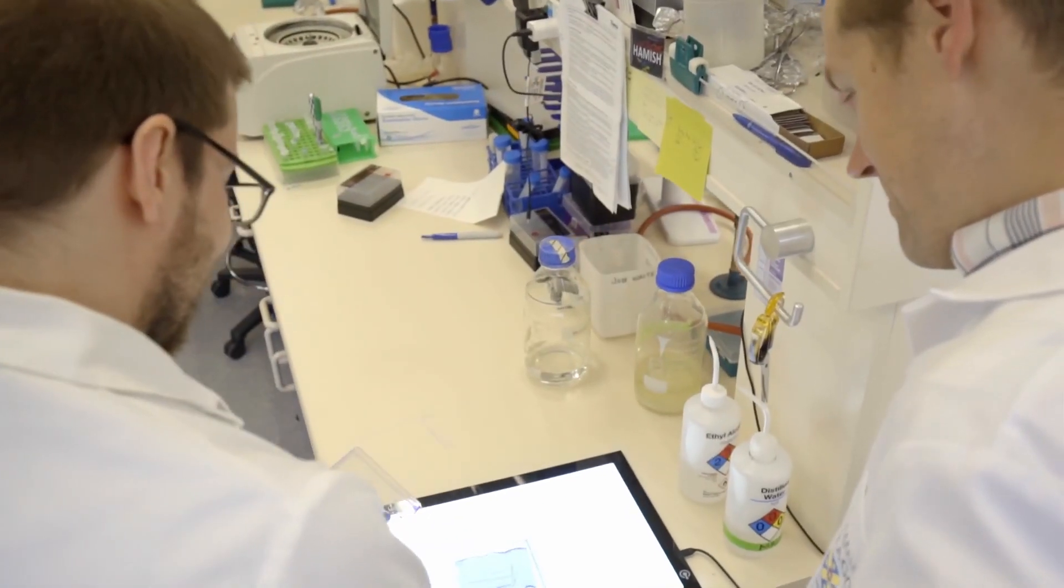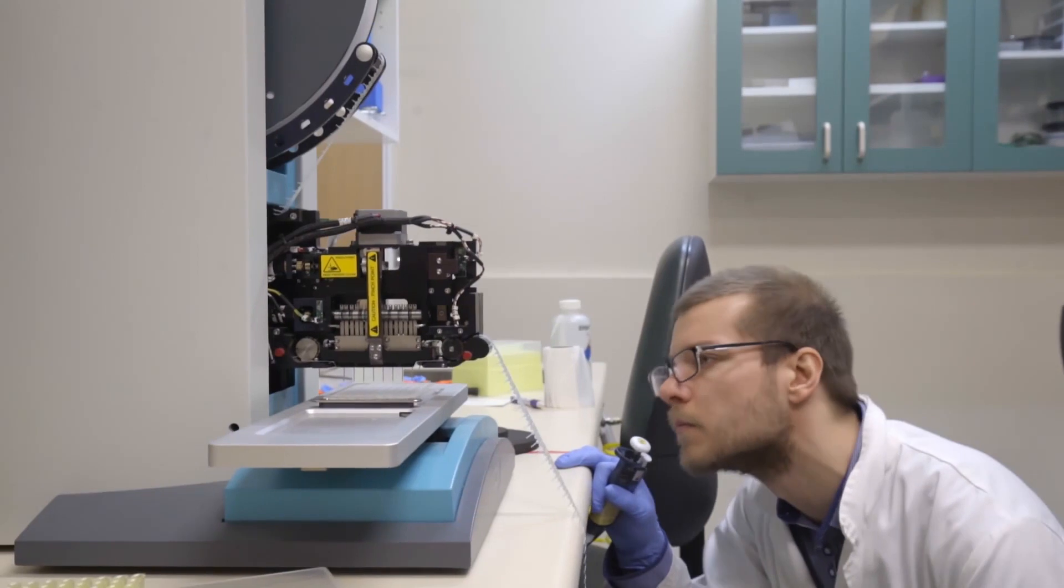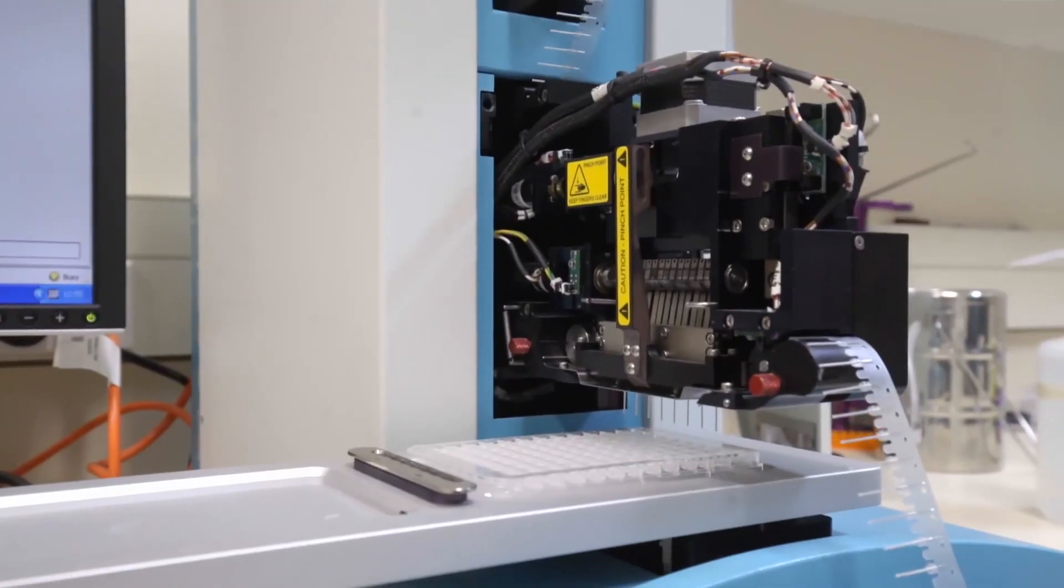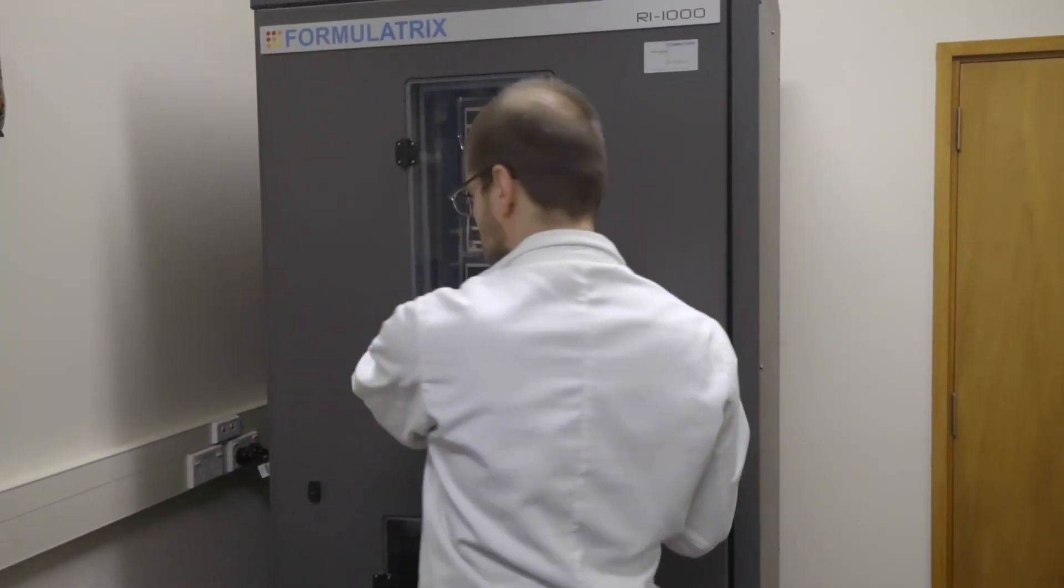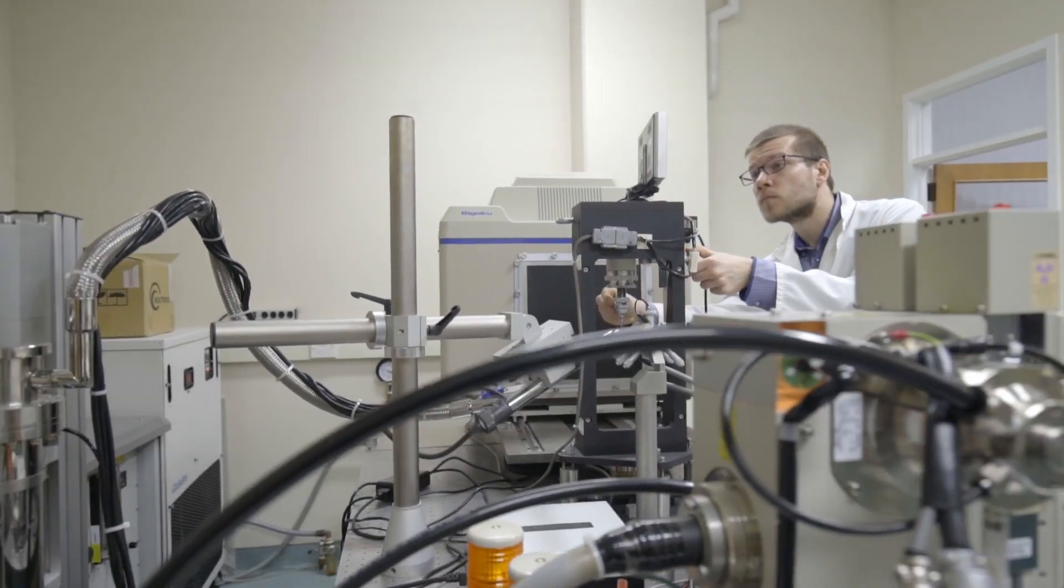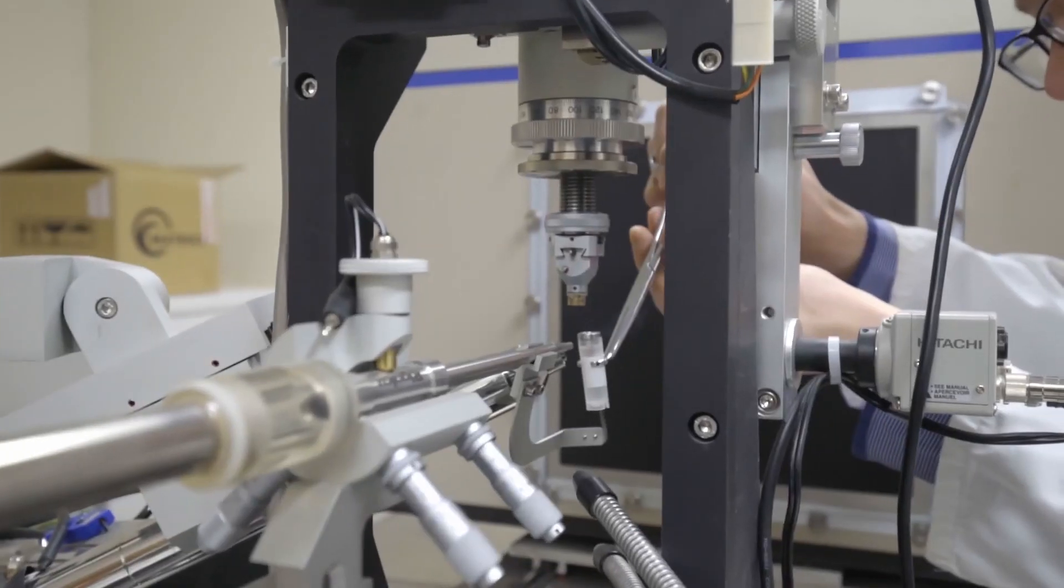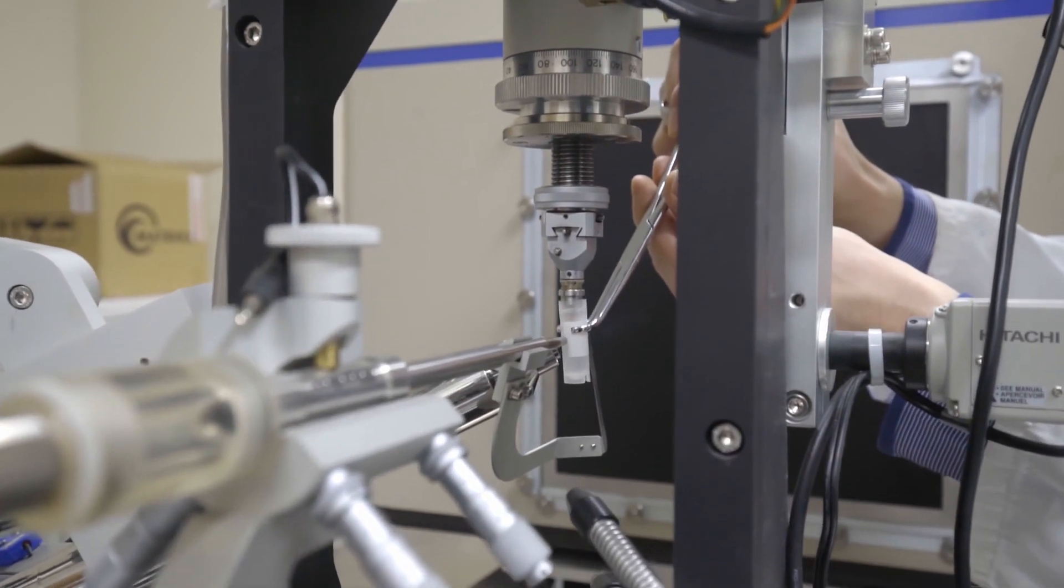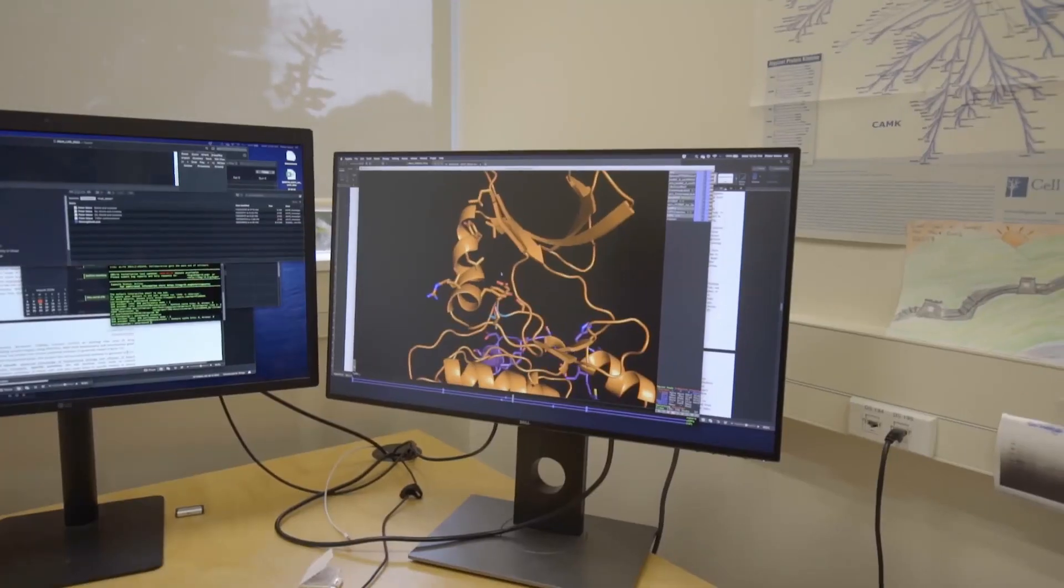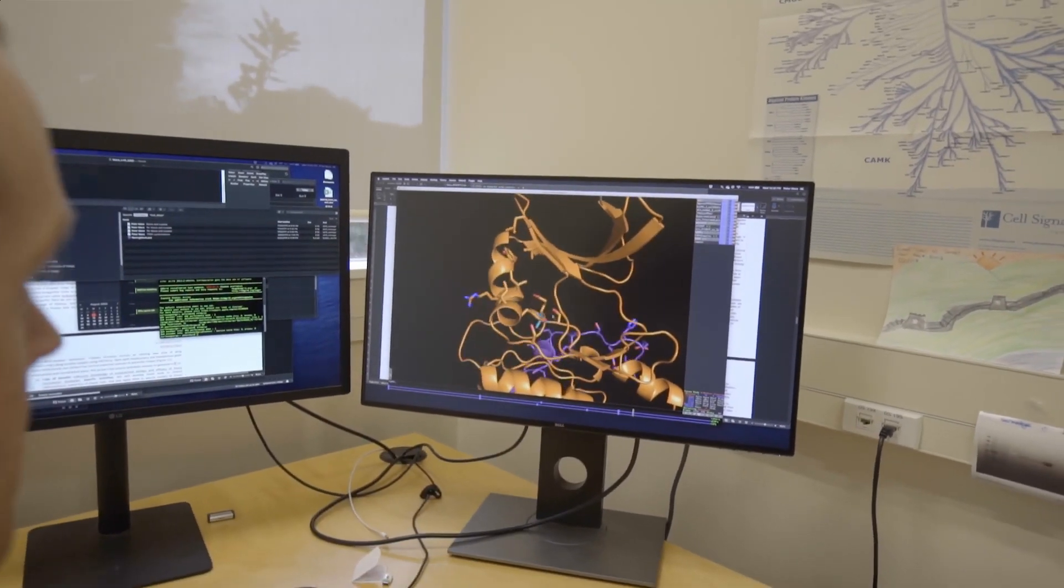My research area is really trying to understand how the shape of proteins affects their function. So we try to take images of proteins by using various different techniques, and by capturing those images and seeing what the proteins look like, what their shape is, we aim to understand how they influence each other, whether they're on or off, and then how they influence how cells behave.